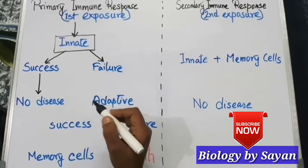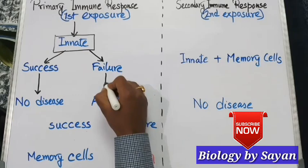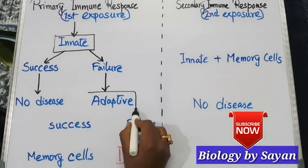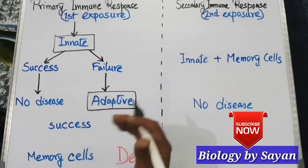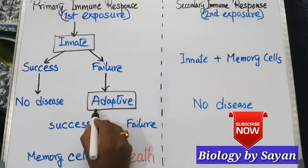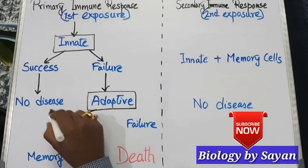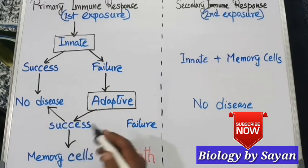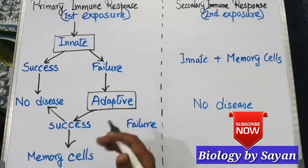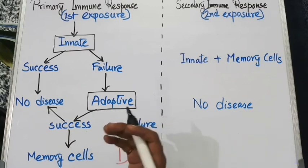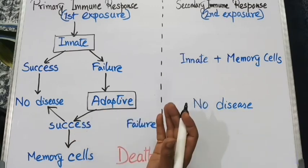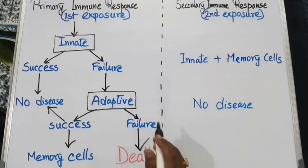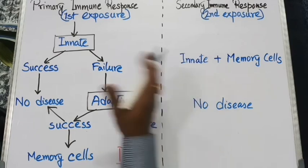But if the innate immune system fails, it activates the adaptive immune response. The adaptive immunity may also have two outcomes: if it succeeds, it leads to absence of disease and develops enough memory cells to help fight such germs in the future. But if the adaptive system also fails, it leads to the death of the individual. This is the fate of the primary immune response.